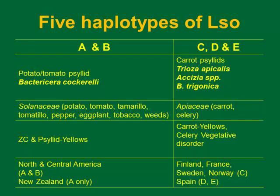In Spain, those two haplotypes have been reported to be associated with both the carrot and the celery disease. The psyllid is — I don't want to mispronounce it. So since we're working on zebra chip, we just focus on these two haplotypes. From now on, everything is A and B.